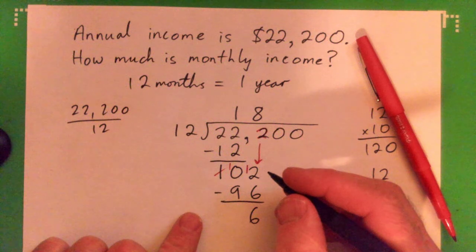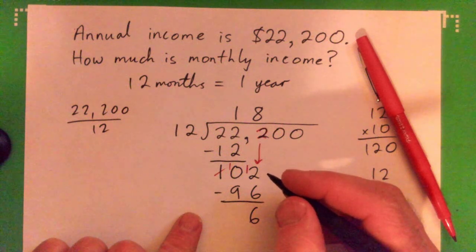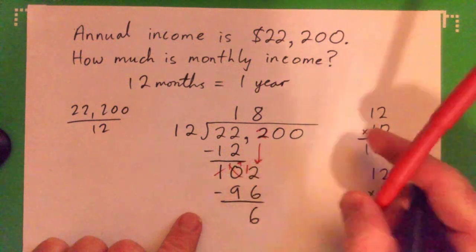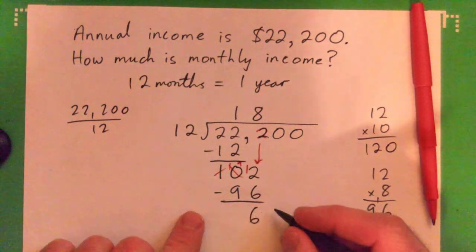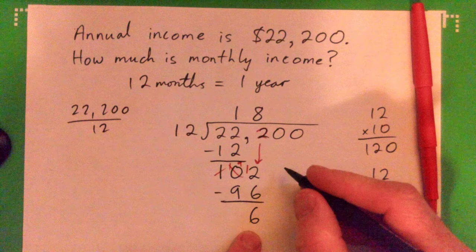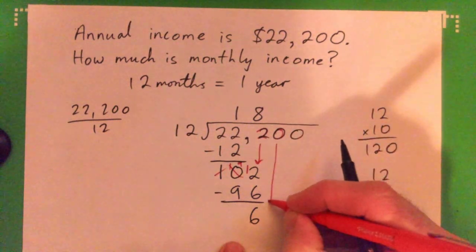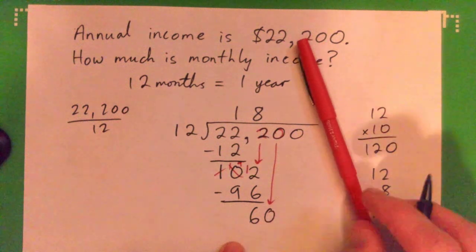That ends up being a 9. 9 minus 9, that's 0, so we just have 6 here. And then bring this 0 down, right? Now 12 into 60.